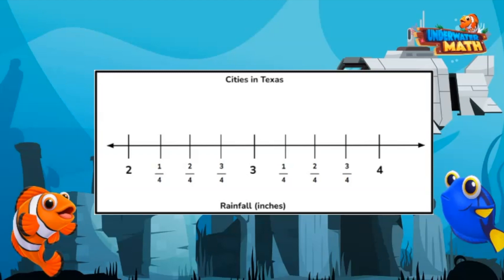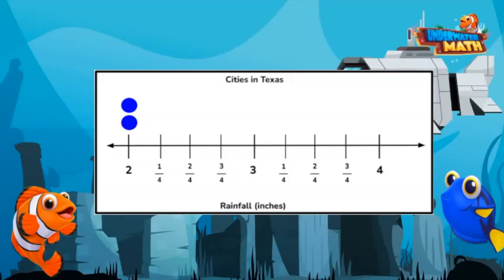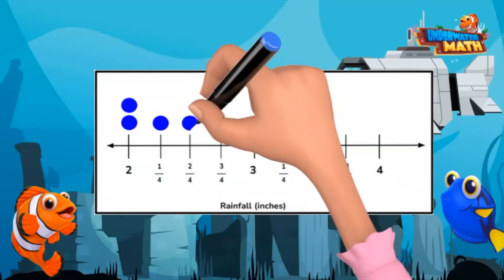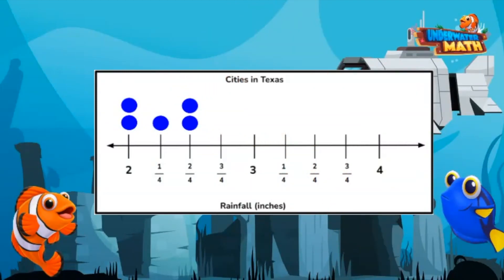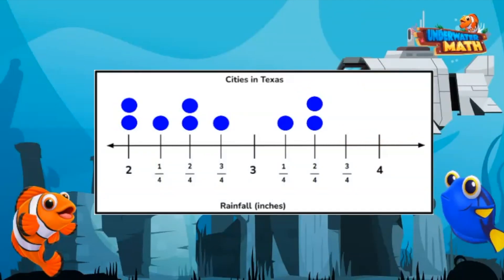Let's plot our data. Two cities received 2 inches of rain last month, so two dots above 2 inches on the number line. One city received 2 and 1/4 inches, so one dot above it. Two dots above 2 and 2/4, or 2 and a half. One dot above 2 and 3/4. One city received 3 and 1/4 inches, so one dot above it. Two dots above 3 and 2/4, or 3 and a half. And lastly, one dot above 3 and 3/4.